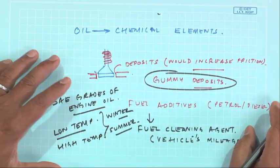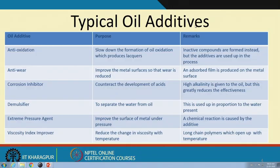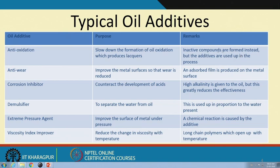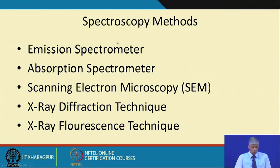In our country the temperature differences are not extremely high, but in places like Canada near the poles, two different grades of engine oil are used — one for winter and one for summer. All these additives are good for the oil and have been added for a purpose, but these elements will show up in the oil analysis and we have to be careful. Various spectroscopic methods can be used to analyze the oil.